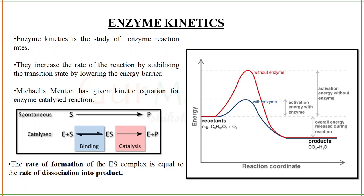Rate is nothing but the speed. Enzyme increases the rate of the reaction by stabilizing the transition state by lowering the energy barrier. In this graph, the x-axis is the reaction coordinate and the y-axis is energy. The red line shows the reaction without enzyme — the energy barrier is very high, requiring a very high activation energy in order to form product.